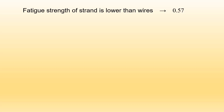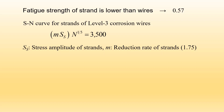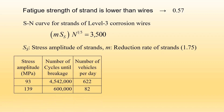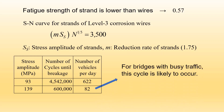The reduction rate for strand versus wire fatigue strength is 0.57 according to Japanese codes, due to friction between wires and stress concentration at the socket. The SN curve for a level 3 corrosion wire is converted to an equation for the strand considering this reduction rate. The resulting estimated stress amplitude could be 93 to 139 MPa. Suppose the bridge is in service for 20 years — with 82 vehicles per day in busy traffic, the hanger rope could break.